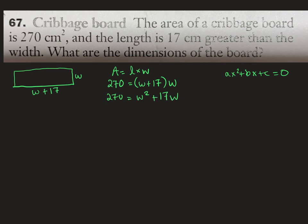Then we want to keep W squared positive. So we're gonna subtract 270 to the right-hand side because we also need to have zero on one side. There we go.